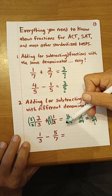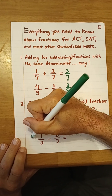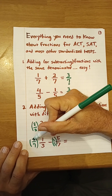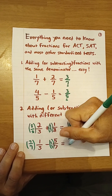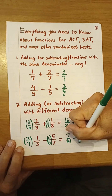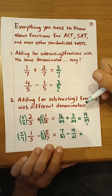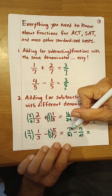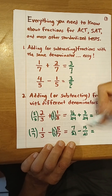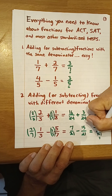Let's try 1/3 minus 5/7. We do the same thing — multiply the first fraction by 7/7 and the second by 3/3 to create a common denominator. We get 7/21 minus 15/21. Since 7 minus 15 is negative, we subtract 7 from 15 and take the sign of the bigger number. 15 is bigger and has a negative, so the answer is negative 8/21.